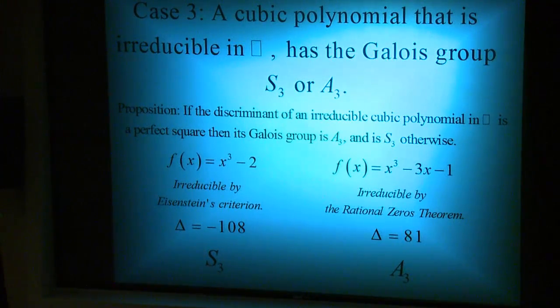Another example is f(x) = x³ - 3x - 1. This is irreducible by the rational zero theorem and its discriminant is 81, which is a square. Consequently, its Galois group is A3.